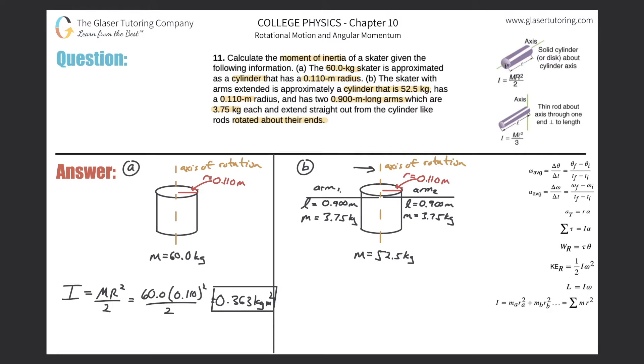That's what the problem was saying—rods rotated about their ends. If the cylinder is spinning about the center axis of rotation and they're telling me I have two rods approximating her arms rotating about their ends, I have to draw the arm to go right to the axis of rotation. This total length is 0.9 meters and the total weight of that arm is 3.75.